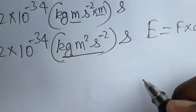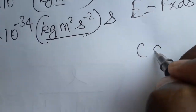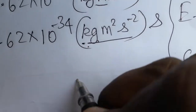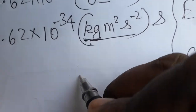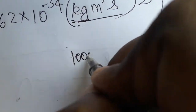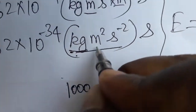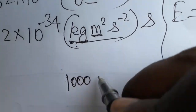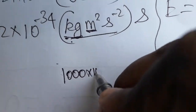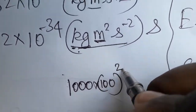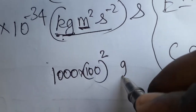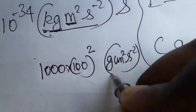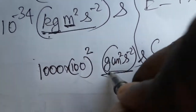In the CGS system, kilogram is 1000 grams and meter is 100 centimeters. Because of the meter squared, we get 100 squared. So we convert to gram·centimeter²·second⁻²·second, which is fully erg·second.